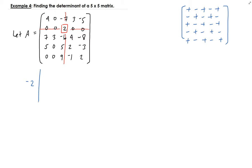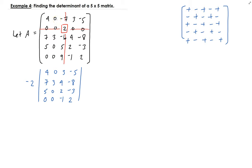So it's minus two times the determinant of the sub-matrix: four, zero, three, minus five, five, seven, three, four, negative eight, five, zero, two, negative three, zero, zero, negative one, and two. We're using the second row because those are the ones with the most zeros. Two is the only non-zero value in that row, so once we find this determinant, we're done.